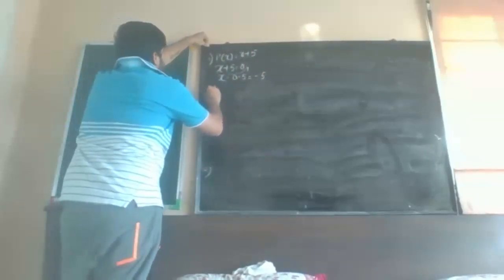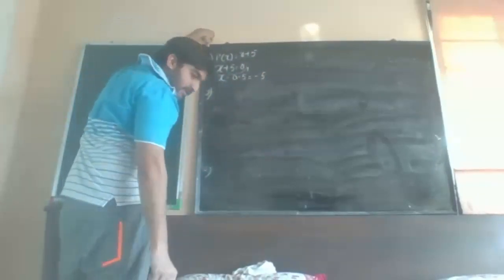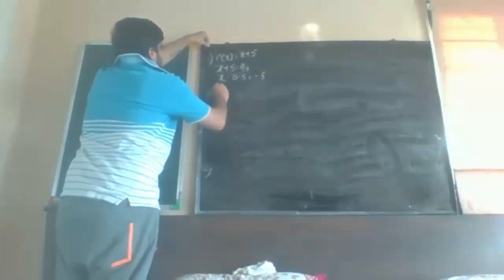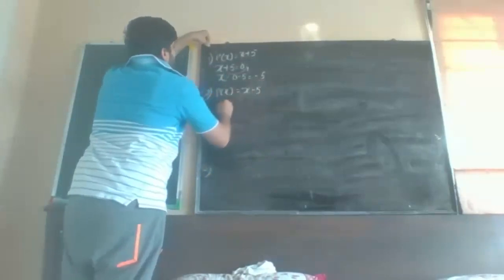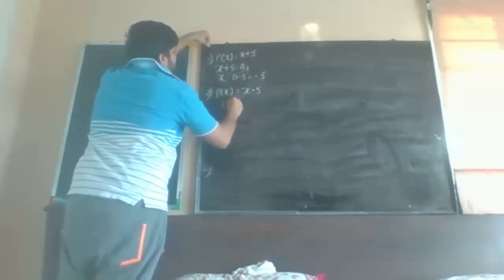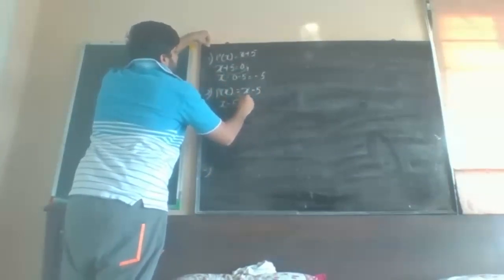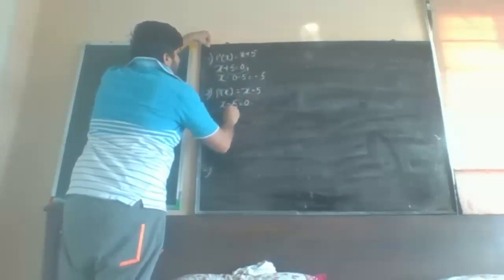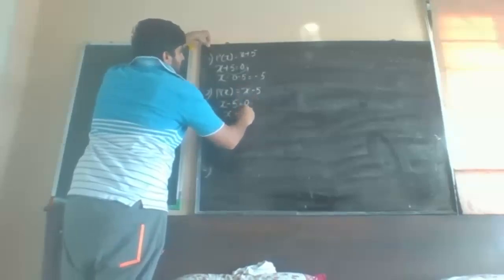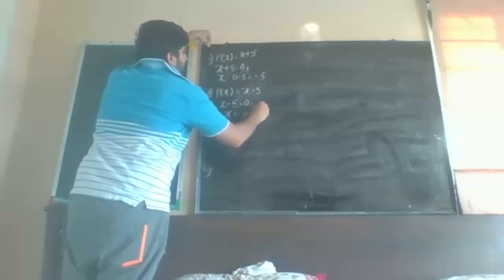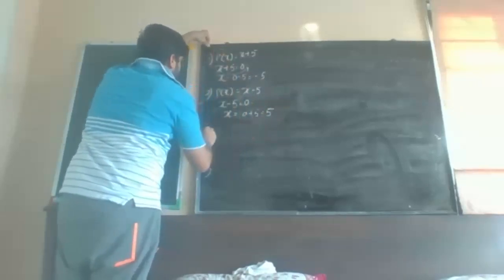Second: p(x) = x − 5. Set x − 5 = 0, so x = 0 + 5, answer is 5.